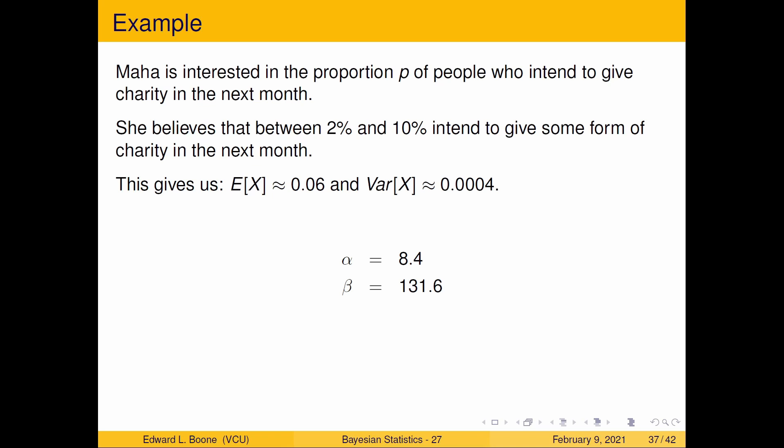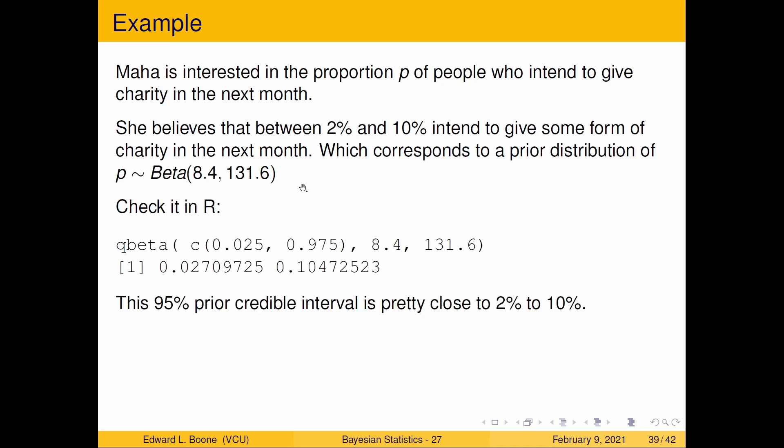We might want to see how we did with this, though. Do we end up getting back what we tried to get back? So if we did this, and I check it in R, I just use Qbeta again. Here's my quantiles that I want for 8.4 and 131.6. And I end up with 0.027 and 0.104. So that's pretty close to 2% and 10%. So that means that this is not at all an unreasonable prior distribution that reflects the 2% and 10% information. And that's why I'm showing it to you. Because it's a mechanism to incorporate information depending on how they give you the information.